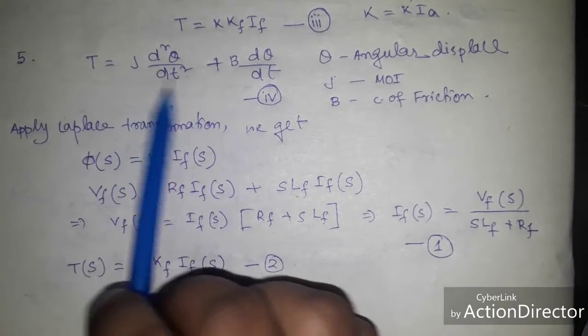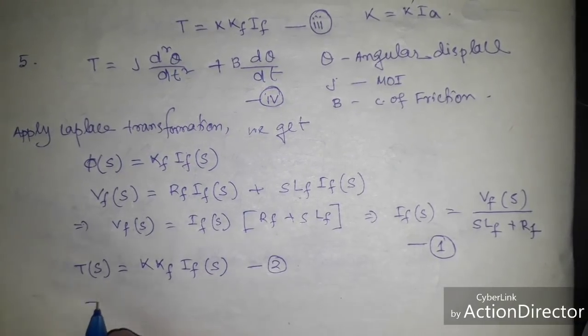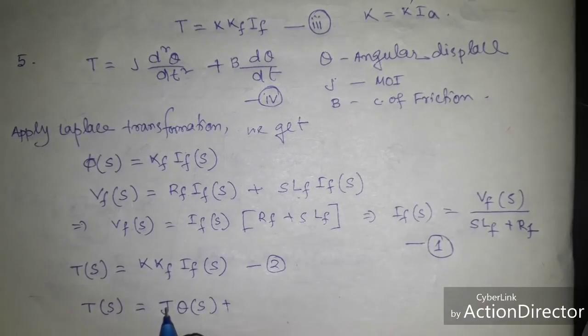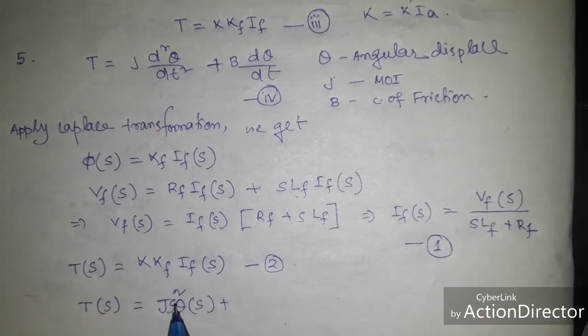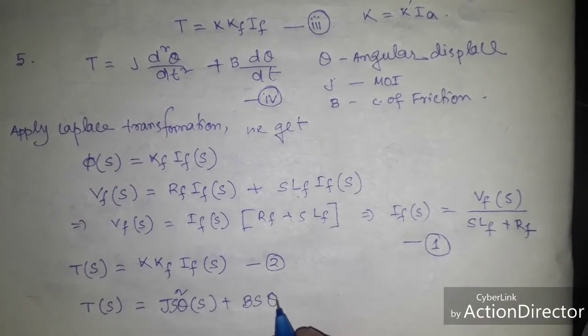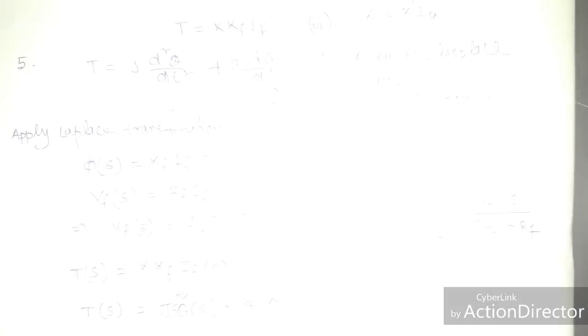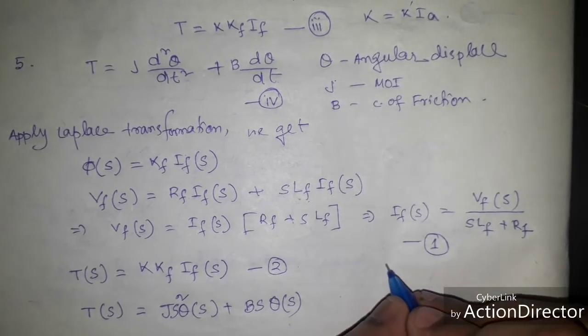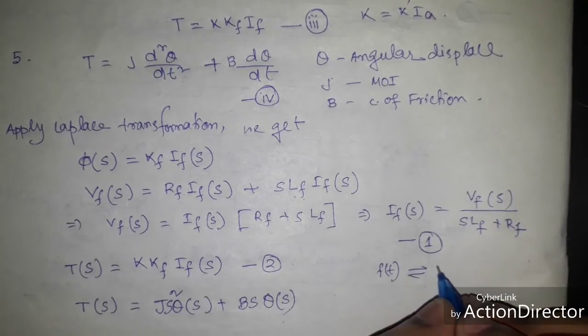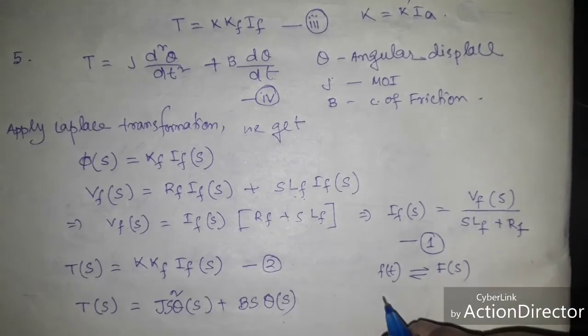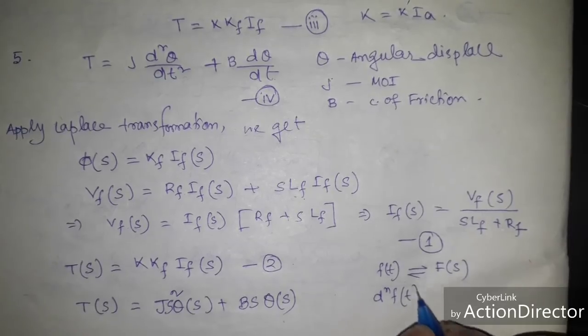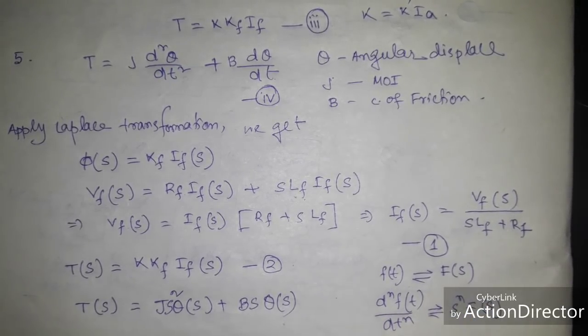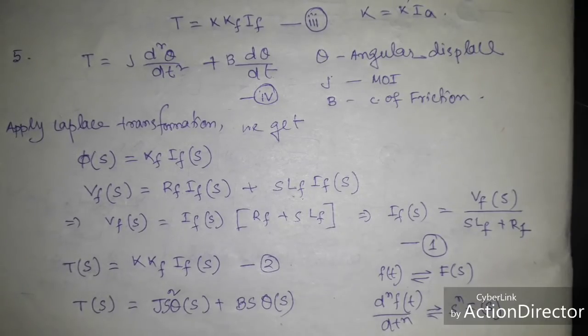Now we apply Laplace transform to this dynamic equation of torque. So we get T(s) equal to J s² θ(s) plus B s θ(s). So you should know that Laplace transform of differential equation. So I write that if f(t) is in time domain and its Laplace transform is F(s), then we can write d to the power n f(t) divided by dt to the power n, this will be s to the power n F(s). This is for the unilateral case.